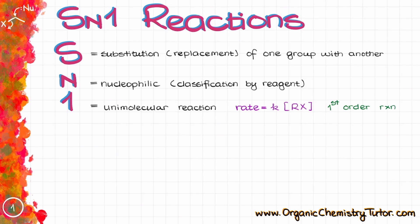So the SN1 reaction is the first order reaction in which the reaction rate only depends on the concentration of the substrate. Thus we can express the rate of the reaction as the rate equals to the rate constant multiplied by the concentration of our substrate here, which is typically going to be the alkyl halide.